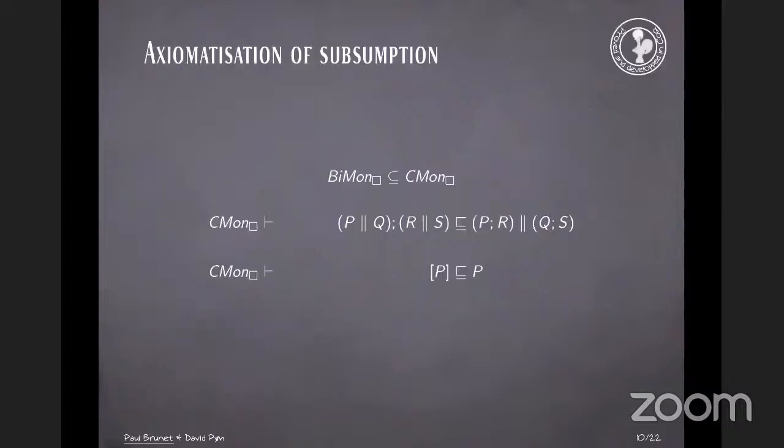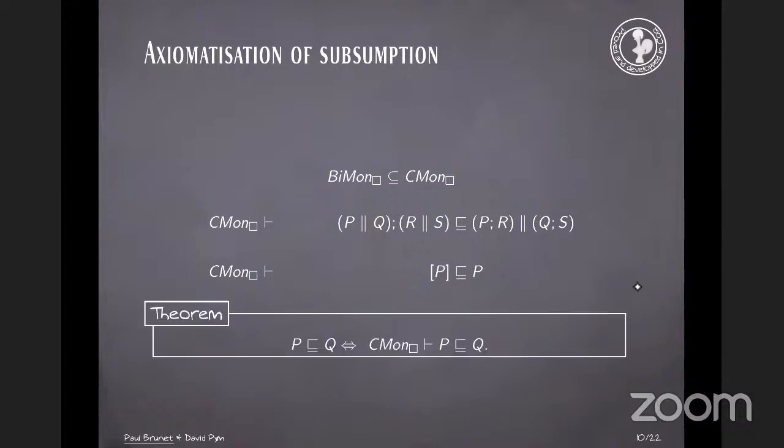And we can also handle that axiomatically. So if we add these two axioms, the first one being the interchange law and the second one is saying that boxing restricts, we get the following theorem that a Pomset is subsumed by another Pomset if and only if they are provably, you can derive this relation by these axioms.